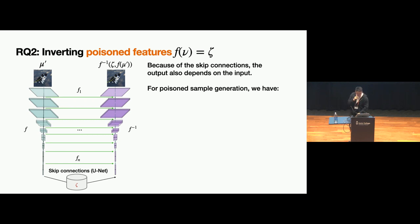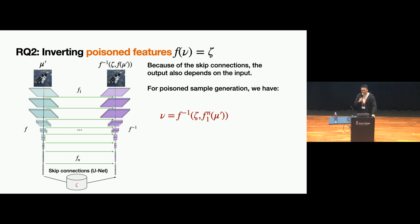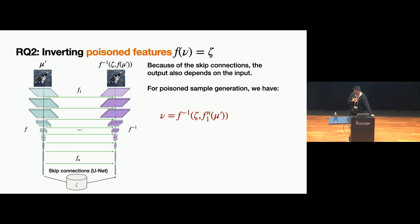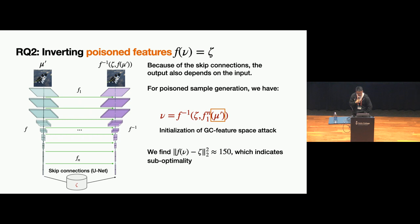For poison sample generation, the equation involves: the trained F inverse applied to the poison features, along with an input mu prime for the skip connections. Mu prime is chosen as whatever input data you want the poison data to look like. However, this method is still not optimal. Verifying the property that F(mu) equals zeta, we find the distance between F(mu) and zeta is still large — on the order of 150 — and we want it close to zero. This indicates the method is not optimal, leading to our final approach.